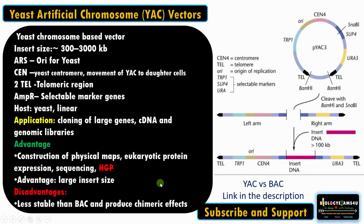The major disadvantage of YAC is it is less stable compared to BAC and often produces chimeric effects or many unwanted overlapping sequences, which is why it was replaced in the human genome project with BAC. The major advantage is the large insert size of up to 3000 kb.